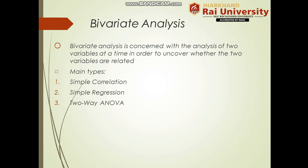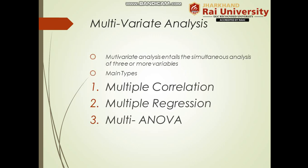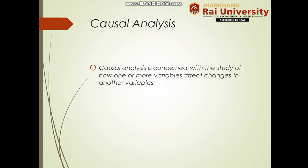Bivariate analysis is concerned with the analysis of two variables at a time in order to uncover whether the two variables are related or not. Its main types are simple correlation, simple regression, and two-way ANOVA. Multivariate analysis entails the simultaneous analysis of three or more variables, and its main types are multiple correlation, multiple regression, and MANOVA.